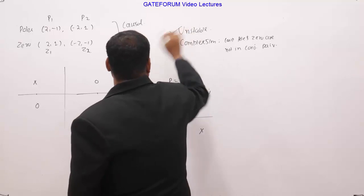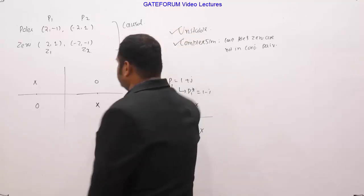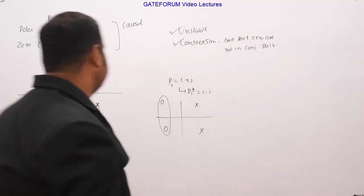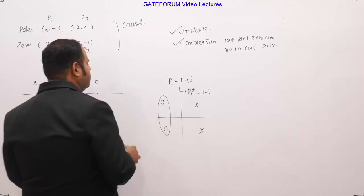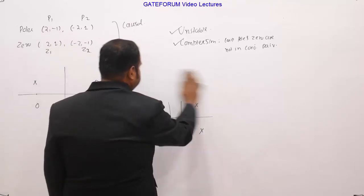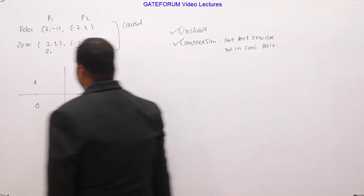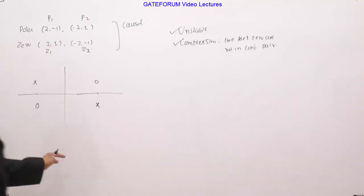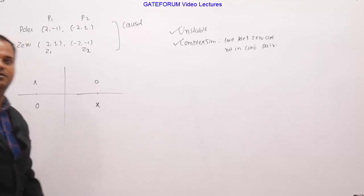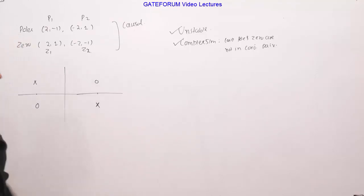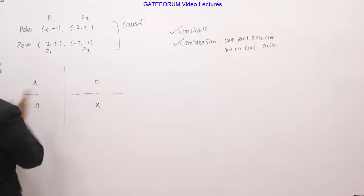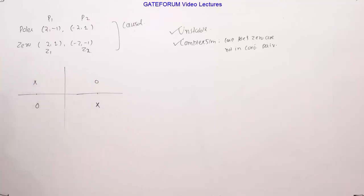So, we have commented on stability — it is unstable — and this is a complex system. The third thing is the filter nature: whether it is low pass, high pass, or all pass. From the symmetric arrangement of poles and zeros with respect to the j-omega axis — they are symmetrically located in terms of both height and distance — it is very clear that this will represent an all-pass filter.